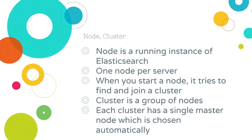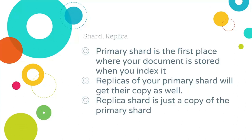A node is a running instance of Elasticsearch. The standard usage is one node per server. When you start a node, it tries to find and join a cluster. A cluster is a group of nodes, and each cluster has a single master node which is chosen automatically. When we say shard, we generally mean primary shard — the first place where your document is stored when you index it. After your document is indexed in the primary shard, the replicas of that shard will get their copy as well. A replica shard is simply a copy of the primary shard.